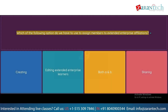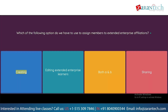Question: Which of the following options do we have to use to assign members to Extended Enterprise Affiliations? Option 1: Creating. Option 2: Editing Extended Enterprise Learners. Option 3: Both A and B. Option 4: Sharing.